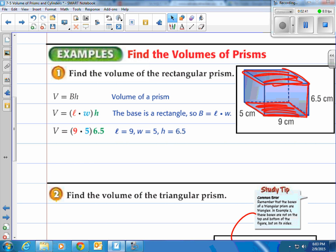Here's the other base, so you can see the distance between them is 6.5. This works for all prisms. Just find the two bases, find the area of one base, multiply by the distance between the two bases. So in this case, we end up with 292.5 cubic centimeters.